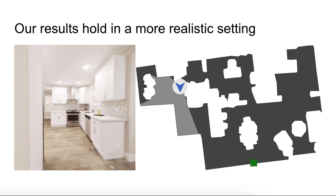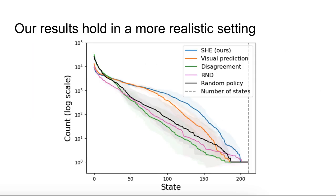On this task, a more successful agent will achieve more uniform coverage by visiting rarer states more frequently. Here we plot the state visitation counts across 2,000 training episodes, sorted by frequency and shown on a log scale. The most common states are on the left, while the tail of rare states is on the right. We find that See Hear Explore, shown in blue, visits rare states 8 times more than the next best baseline.